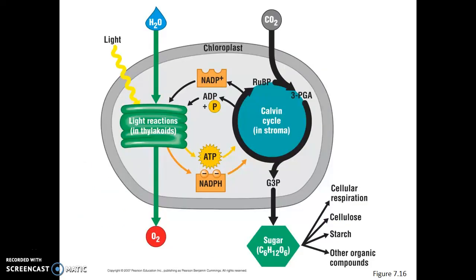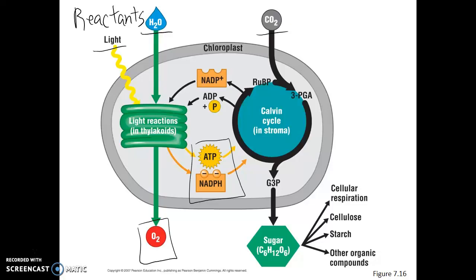So here we have our entire equation for photosynthesis. We have our reactants at the top of this diagram — water and carbon dioxide. We see the water is going into the light reactions, and the CO2 is going into the Calvin cycle. We also have light, which is supplying the energy for this chemical reaction. Coming out of the light reactions, we have oxygen gas, which is one of our chemical products, and we also have ATP and NADPH — two forms of chemical energy. That chemical energy from the light reactions is going to combine with the carbon dioxide in the Calvin cycle to form glucose.